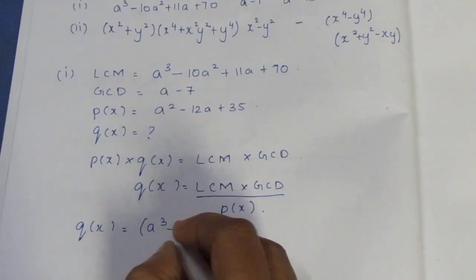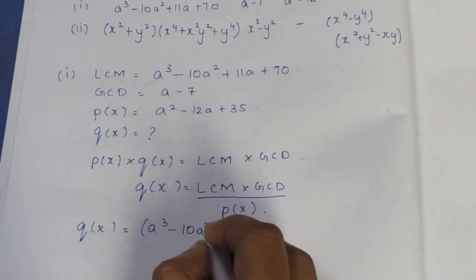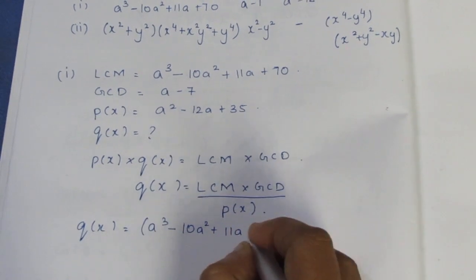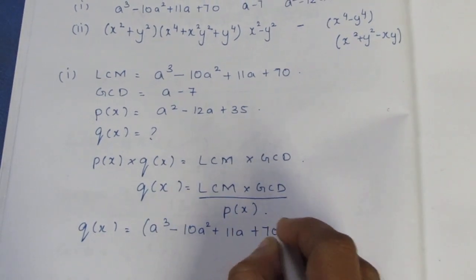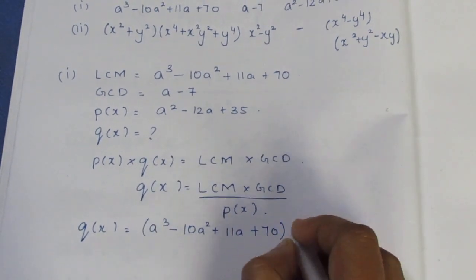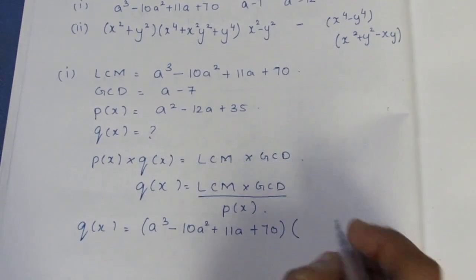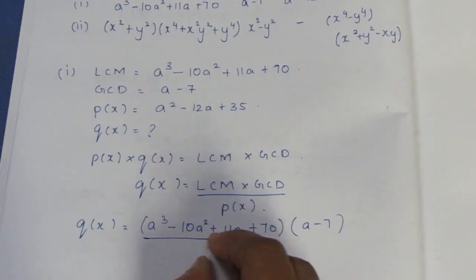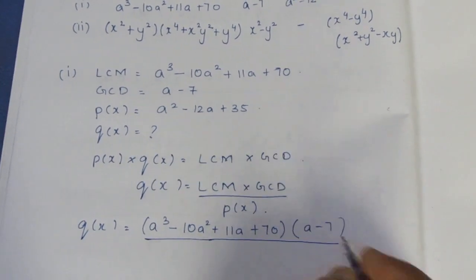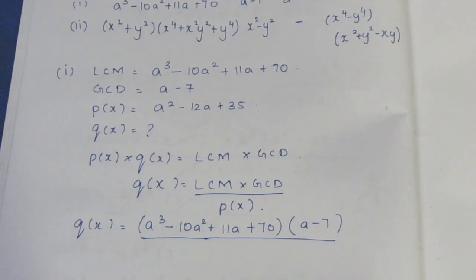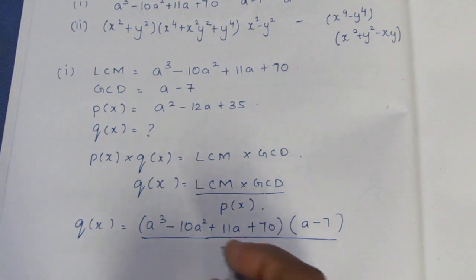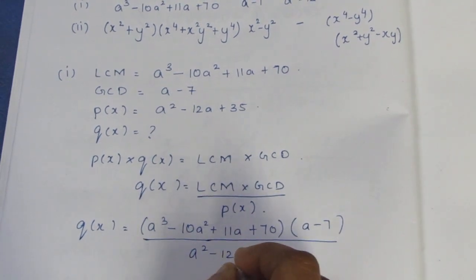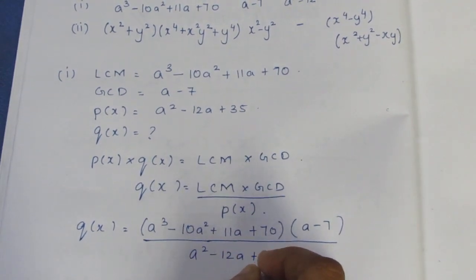So Q of X is equal to LCM into GCD divided by P of X. LCM is equal to a³ minus 10a² plus 11a plus 70. GCD is equal to a minus 7. P of X is equal to a² minus 12a plus 35.